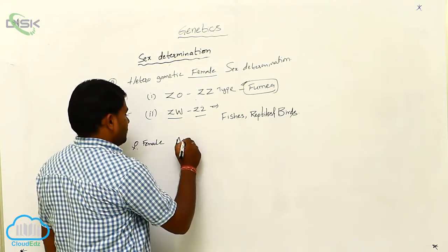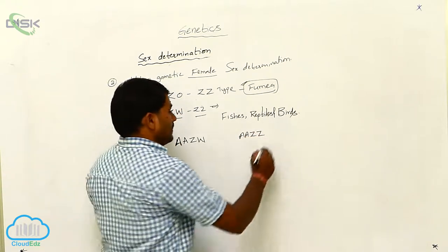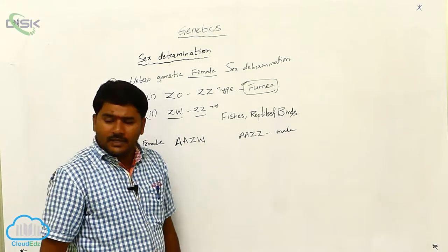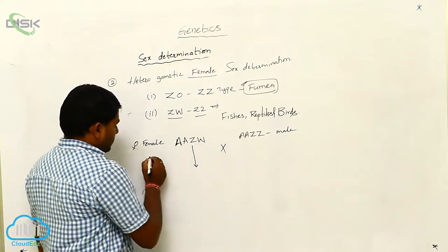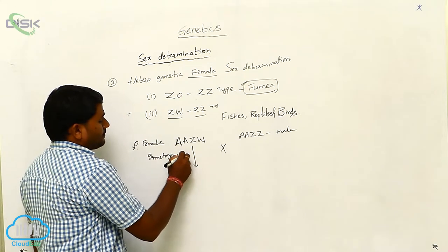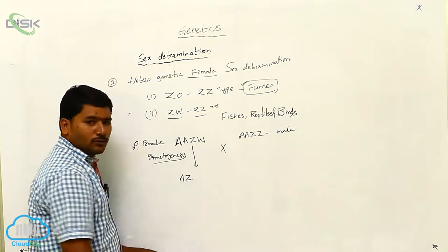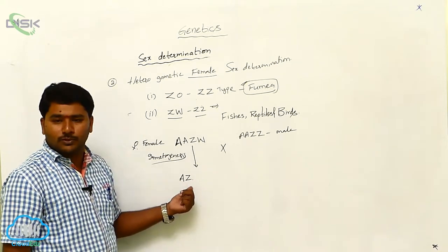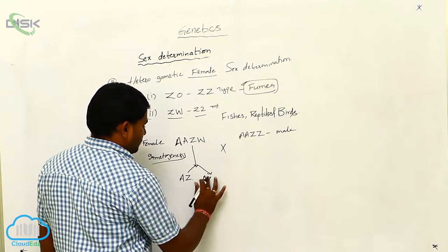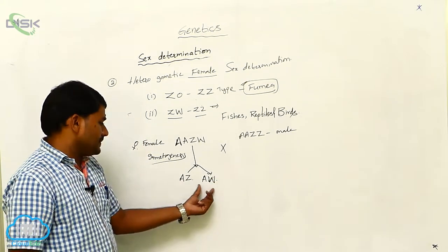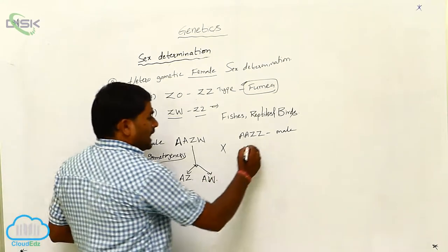The female karyotype is A, A, Z, W — ZW is the karyotype of the female. The male karyotype is A, A, Z, Z. During gametogenesis, two types of ova are produced from the female: one type possessing AZ chromosomes — one set of autosomes and one Z sex chromosome — and another type of ovum which is AW. So two types of ova are produced.